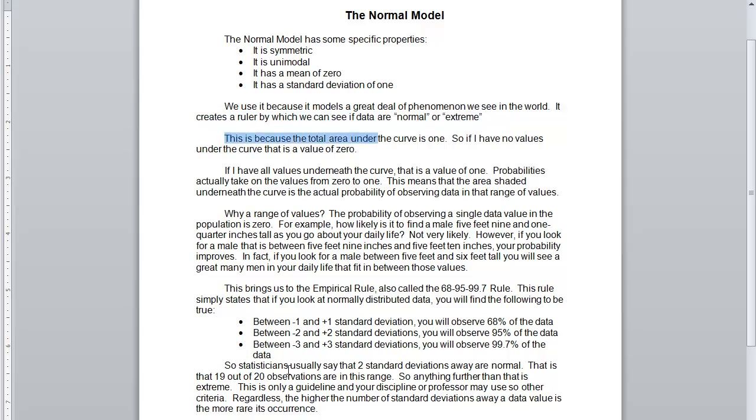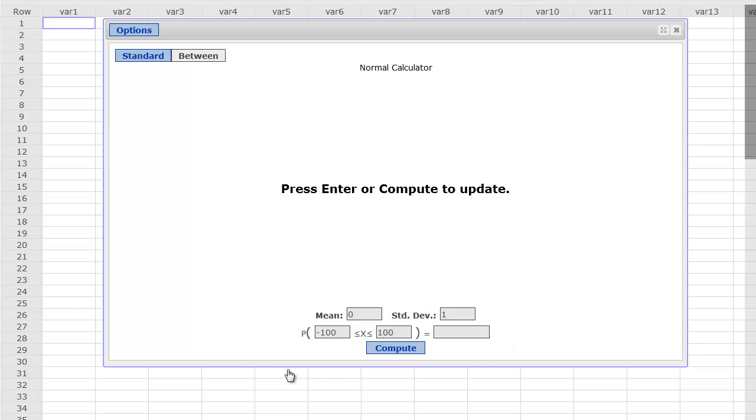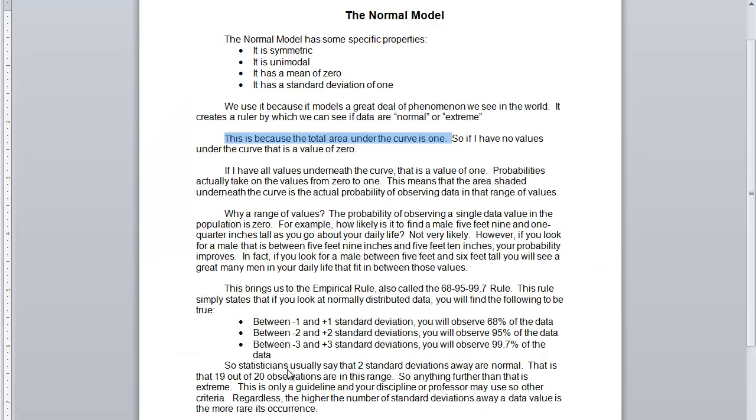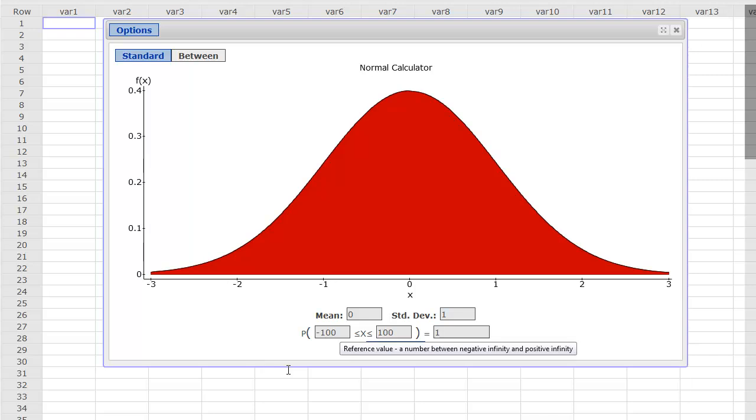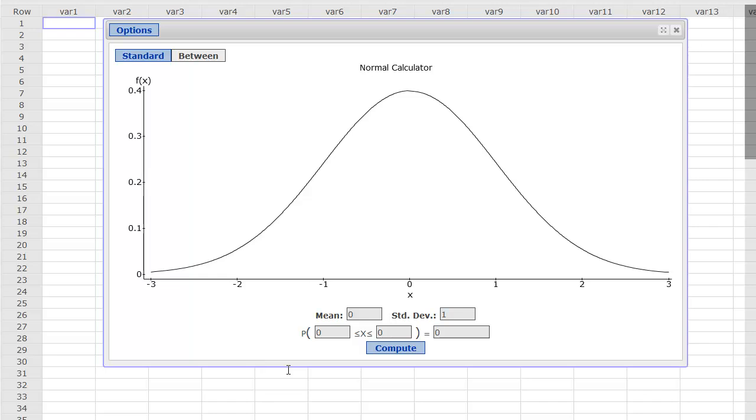This is because the total area under the curve is 1. As I go back to my normal curve and I go as far to the left and as far to the right as I want, the area under the curve is 1. I completely shade this in. Every data value I have observed is here, and so the area is 1 underneath the curve. If I have no values under that curve, the value is 0. If I go from 0 to 0, you can see there's no area under the curve. And if I have no values, there's no area, and so it's 0.